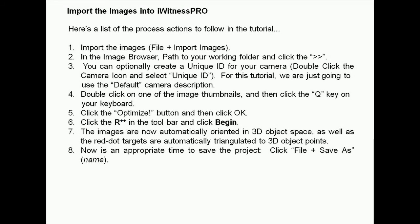Import the images into Eyewitness Pro. Here is a list of the process actions to follow in this tutorial. Click File and Import Images. In the image browser, path to your working folder and click the double right arrow. You can optionally create a unique ID for your camera by double-clicking the camera icon and selecting Unique ID.